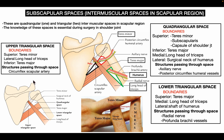The boundaries of the upper triangular space are: superiorly, teres minor; laterally, the long head of the triceps; and inferiorly, teres major. The structure passing through this space is the circumflex scapular artery, which is a branch of the subscapular artery.